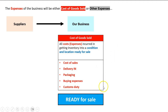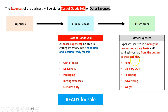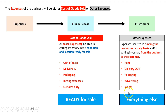If it's not that, it's going to go here as an other expense. So if it's not required to get the inventory ready for sale, we're going to put it as an other expense. A good way to think about that is it's all the expenses to run the business and get the inventory from our business to the customer — expenses incurred in running the business on a daily basis. There we'll see things like rent, delivery out instead of delivery in, packaging in some cases, advertising, and wages. This section is the everything else section; all expenses that aren't required to get inventory ready for sale go here as other expenses.